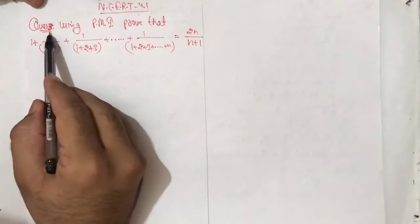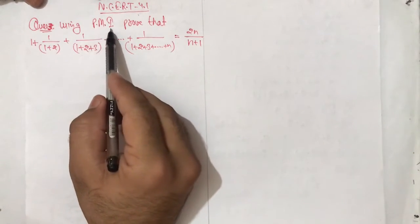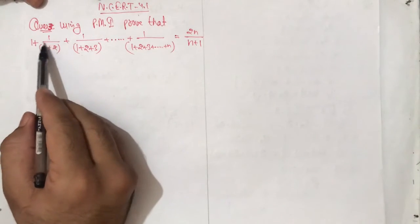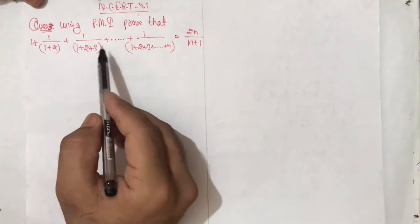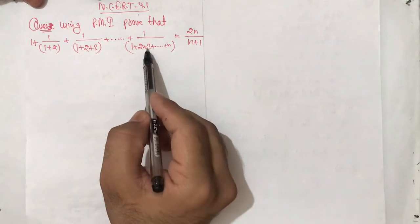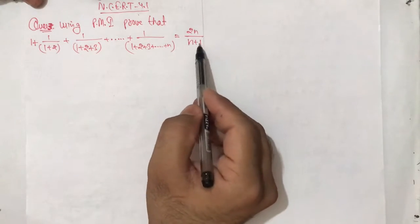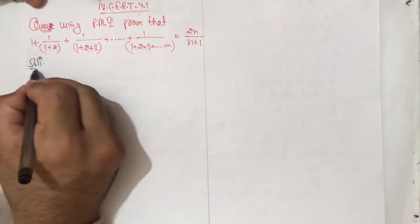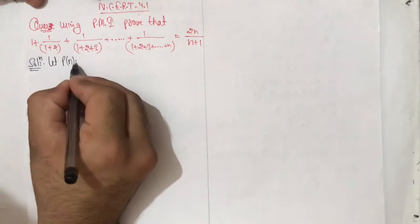Exercise 4.1, question number 3. Using the principle of mathematical induction, prove that 1 plus 1 upon (1 plus 2) plus 1 upon (1 plus 2 plus 3) and so on, up to 1 upon (1 plus 2 plus 3 and so on up to n) is equal to 2n upon (n plus 1). Solution: let us consider P(n) be the statement.